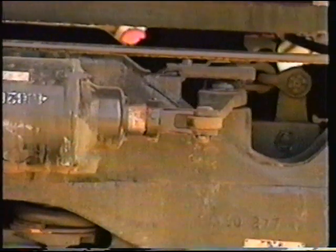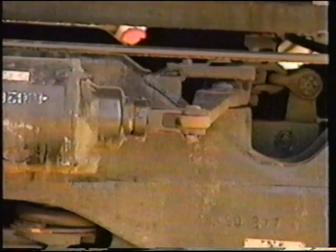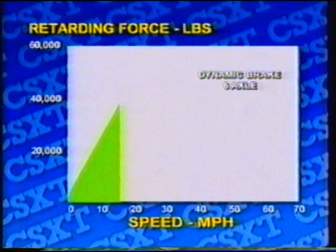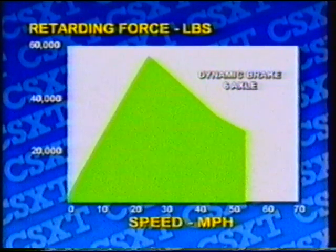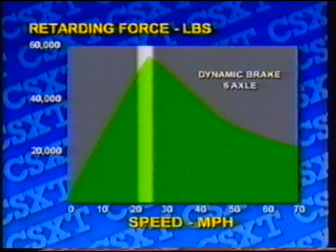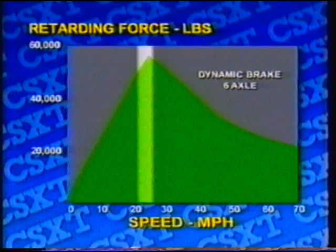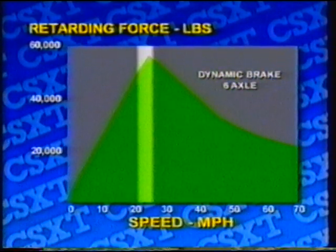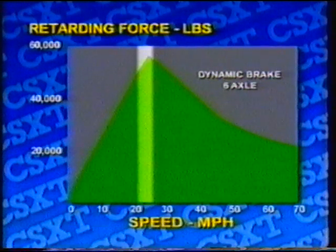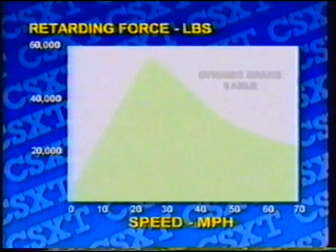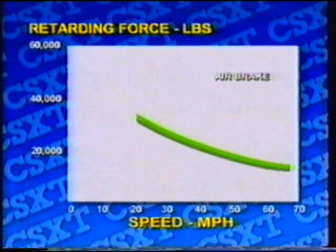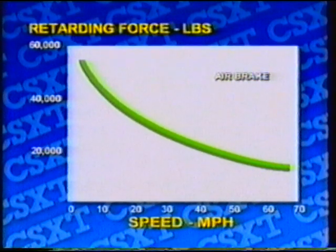The dynamic brakes or air brakes retard or slow the train. The retarding force is highest when the dynamic brake is used between 20 and 25 miles per hour. This force gradually reduces at speeds above or below this range. Retarding forces from an air brake application gradually increase as speed decreases.